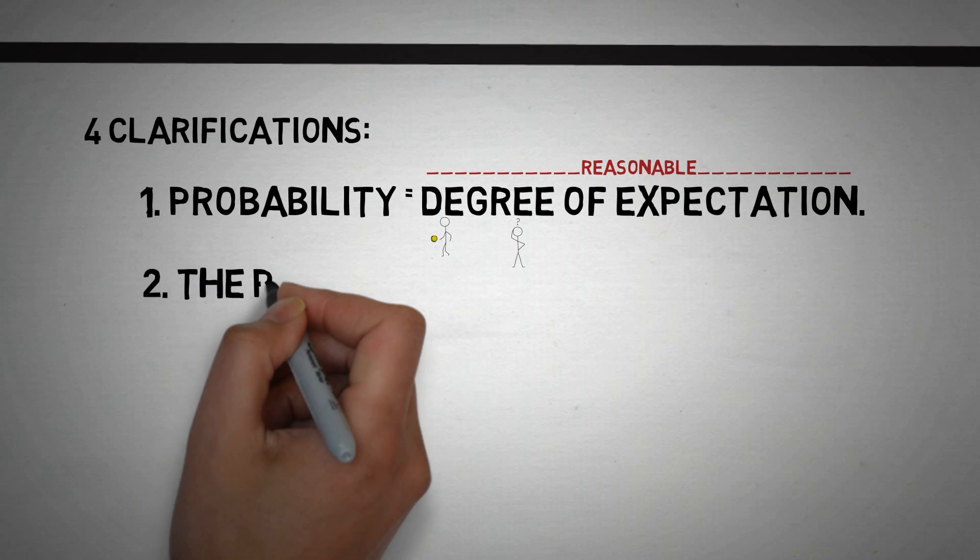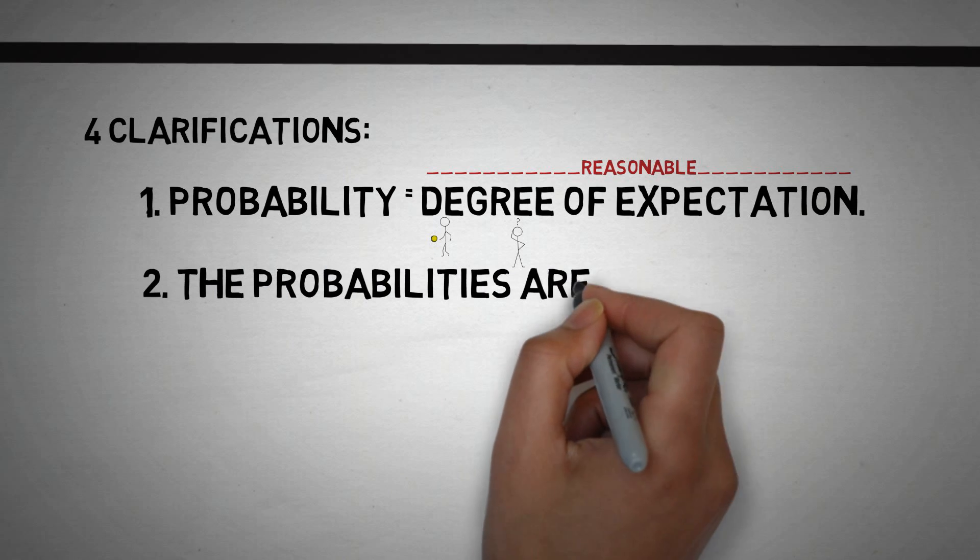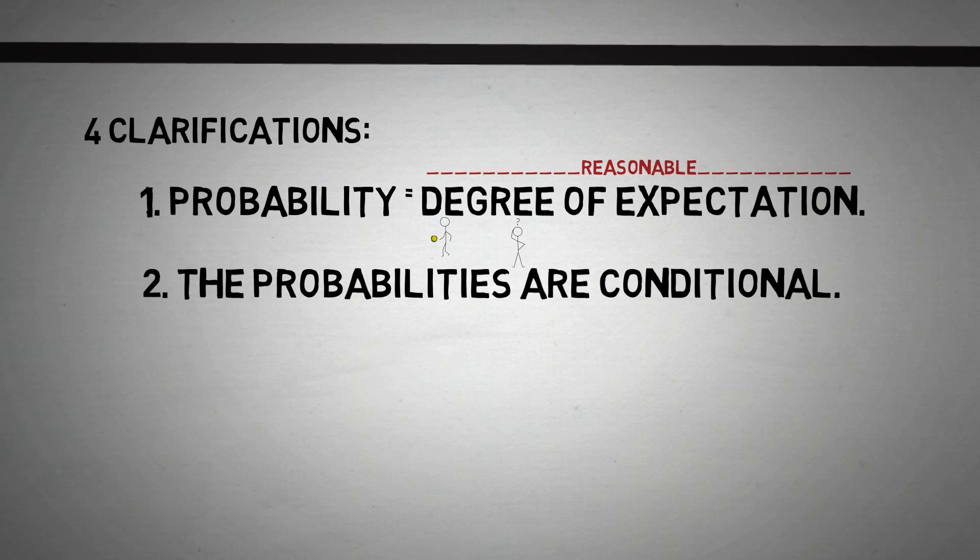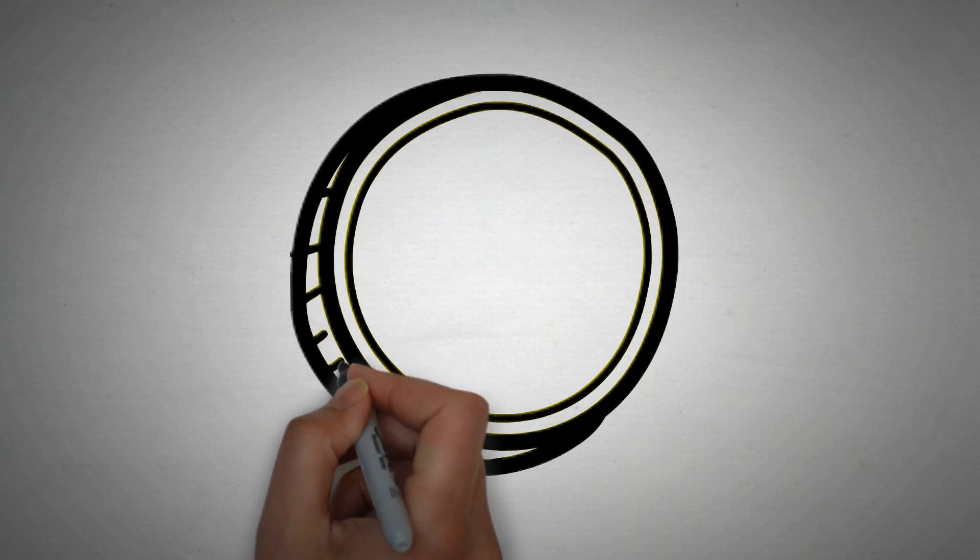The second thing to understand about the argument is that it uses conditional probabilities. We are considering how likely something would be given a certain hypothetical situation. Conditional probabilities are part of ordinary reasoning. Think of the coin.